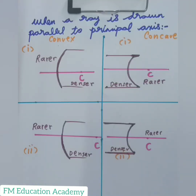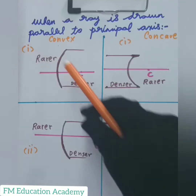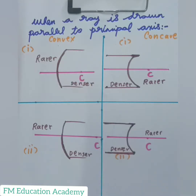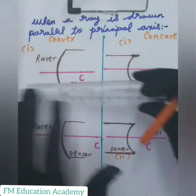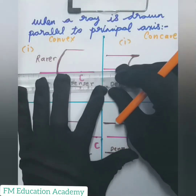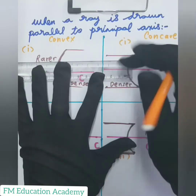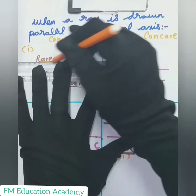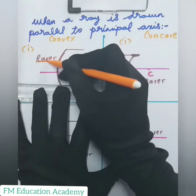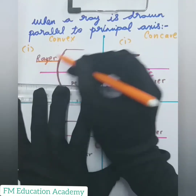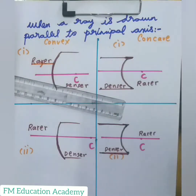Remember, whenever a ray travels from rarer medium to a denser medium, it bends towards the normal. So first we are going to draw a diagram for a convex surface when the ray travels from rarer medium to denser medium. Let us suppose this is my principal axis — whenever a ray is parallel to my principal axis, it is coming in this direction, so I am drawing the arrow like this.